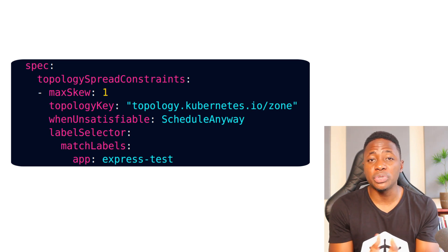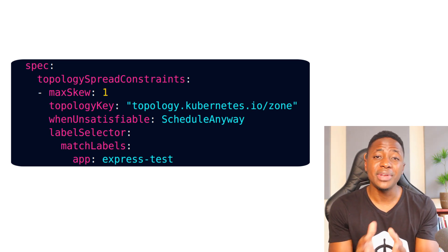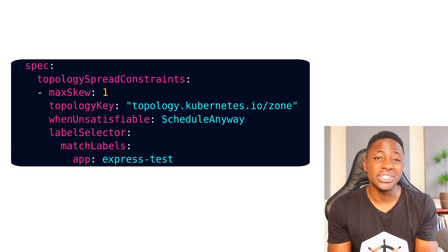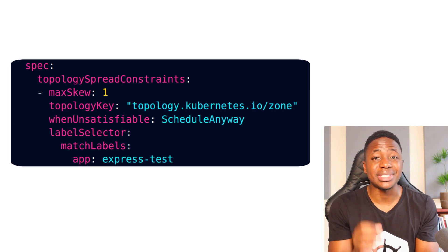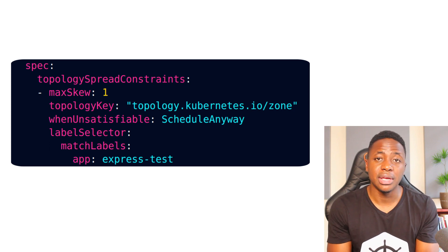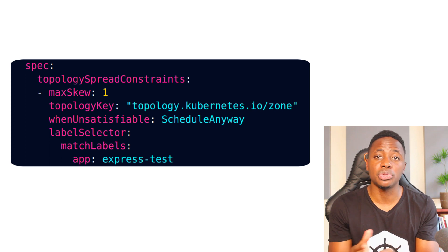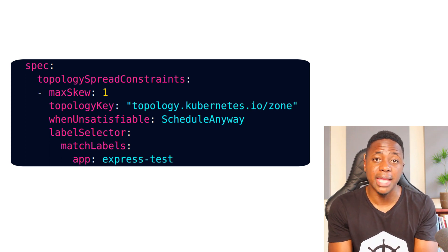Max Skew is used to control or determine the maximum point to which things can be uneven across the topology domains. For example, if an application has seven replicas and is deployed across three AZs, you can't get an even spread, but you can influence how uneven things will be. In this case, the max skew can be anything between 1 and 7. A value of 1 means we can potentially end up with a spread like 2, 2, 3 across our topology domains.